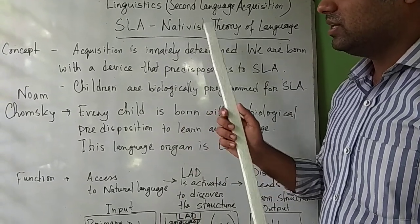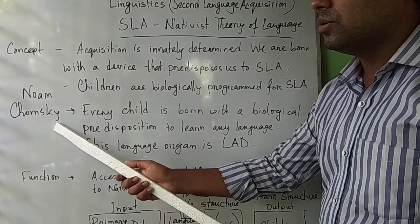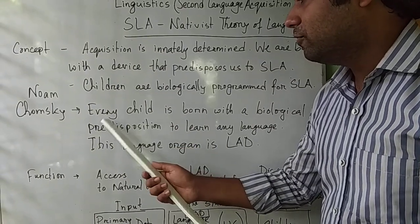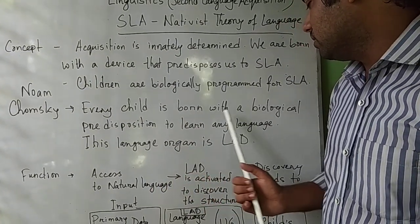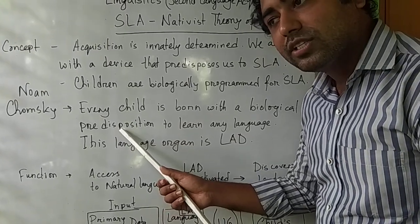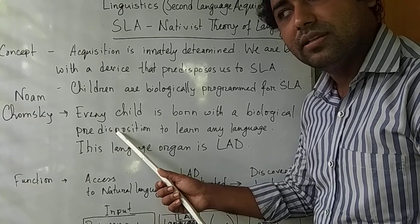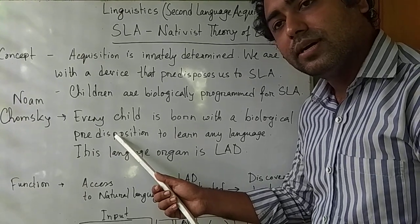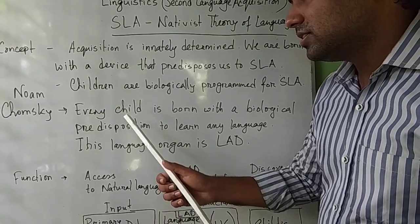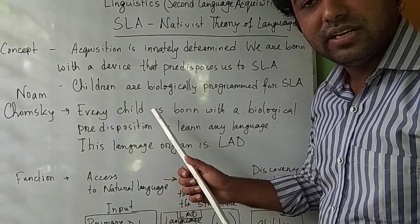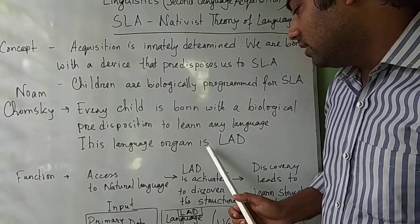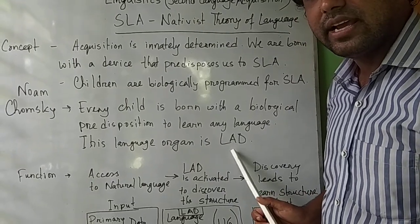Noam Chomsky is a prominent linguist who talks about the main idea of nativist theory. He said that every child is born with a biological predisposition — every child has a biological program inside their brain, in both the left hemisphere and right hemisphere, to learn any language. This language organ is called the Language Acquisition Device, or LAD.